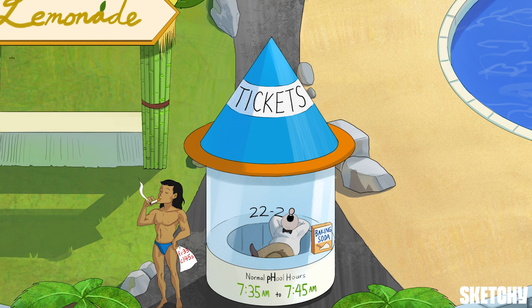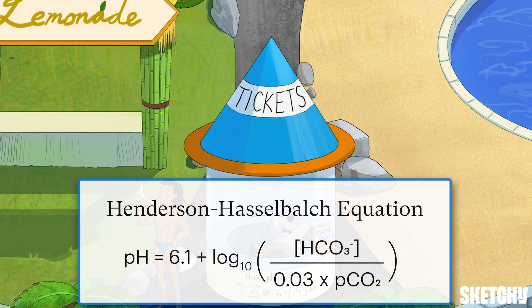We'll get into both of these soon. But first, to get a better understanding of the relationship between pH, bicarbonate, and carbon dioxide, let's review the Henderson-Hasselbalch equation. This equation states that pH equals 6.1 — the dissociation constant of carbonic acid — plus the log of the plasma bicarbonate concentration divided by 0.03, the solubility coefficient for CO2 in blood, times the partial pressure of arterial carbon dioxide. The important takeaway is that pH is determined by the ratio of plasma bicarbonate to CO2.